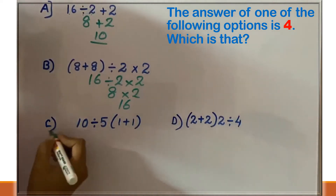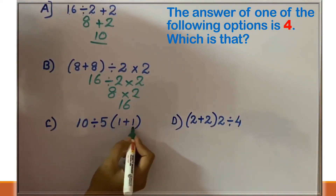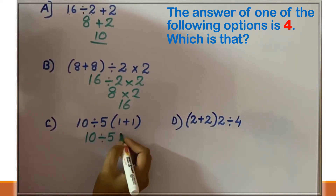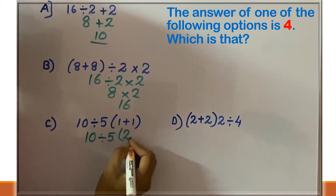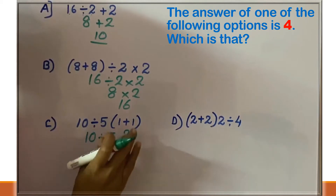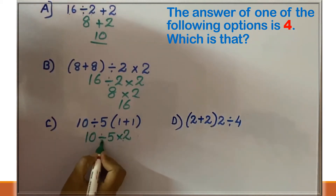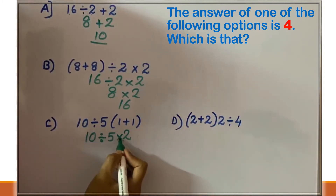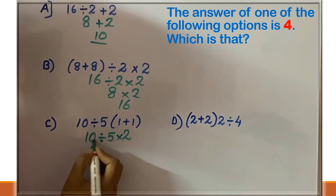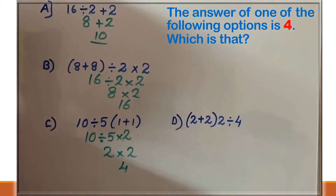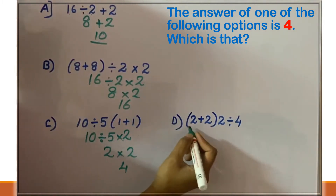Option C: here we have to do the bracket first. Inside the bracket, 1 plus 1 is 2. Consider the bracket result as multiplication. Then in division and multiplication, we do division first: 10 divided by 5 is 2. Then multiplication: 2 into 2 is 4. So option C result is 4. Let's finish with option D as well.